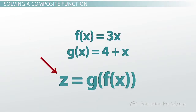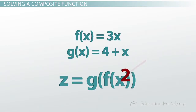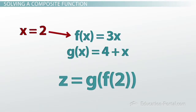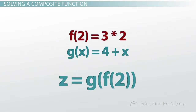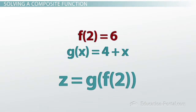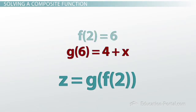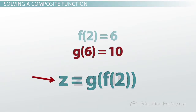To find z when x equals 2, we compute g of f of 2. First, plug x equals 2 into f of x: f of 2 is 3 times 2, which is 6. Then g of f of 2 becomes g of 6, which equals 4 plus 6, giving us 10. So z equals 10.